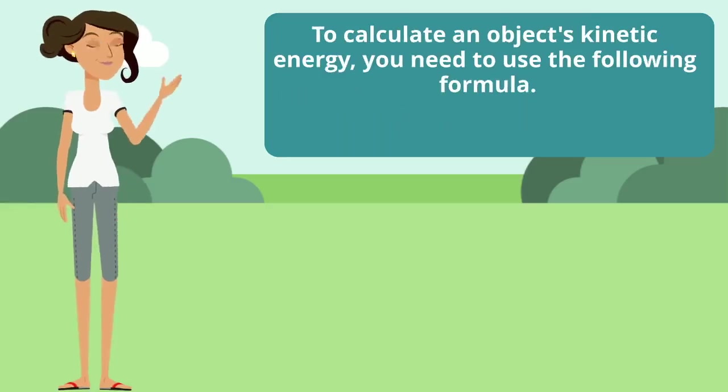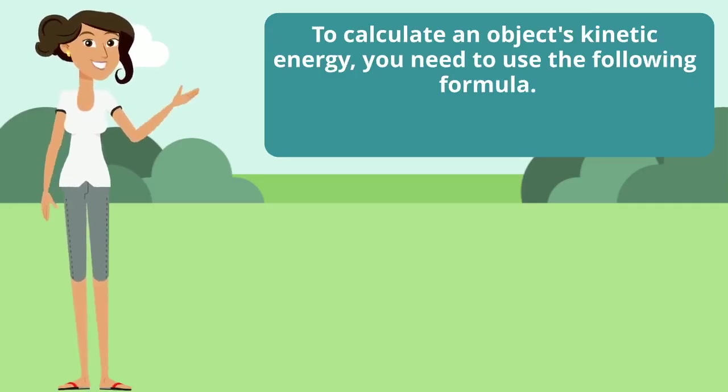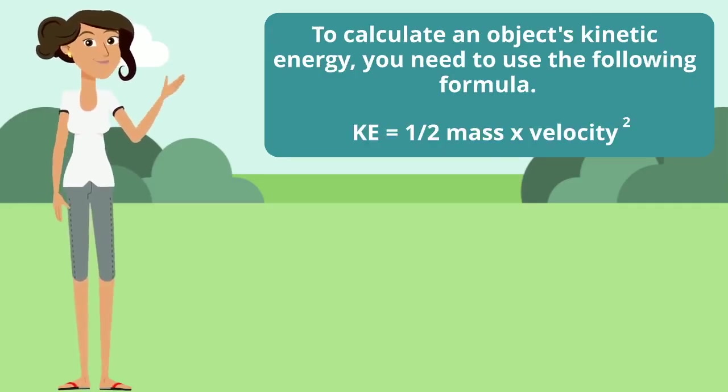To calculate an object's kinetic energy, you need to use the following formula. Kinetic energy is half the mass times velocity squared.